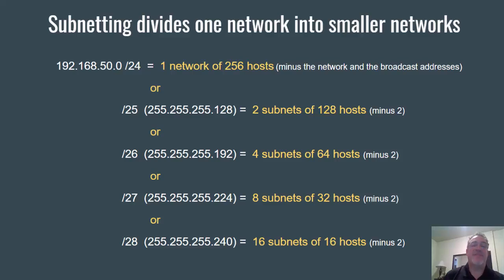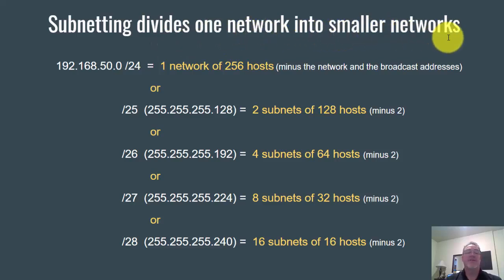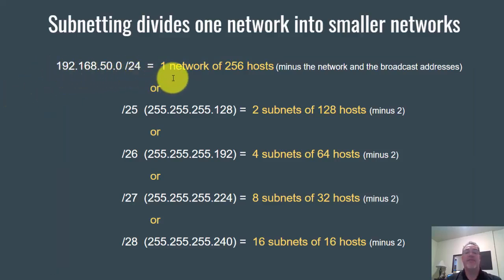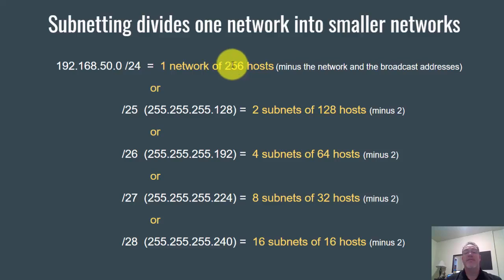Now we get to the concept of subnetting. Subnetting is when we divide one network into smaller networks. For example, if we have the 192.168.50.0/24 network, we have one network of 256 hosts. Minus the network address and the broadcast address, you have 254 usable hosts. But we'll say one network of 256 hosts.